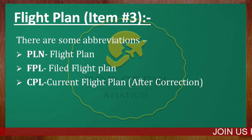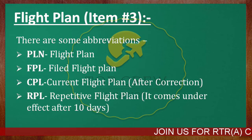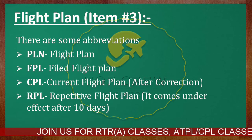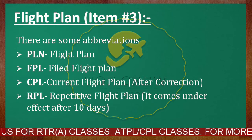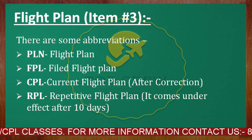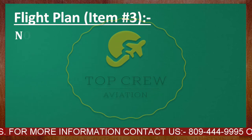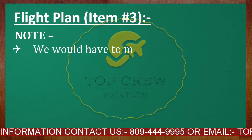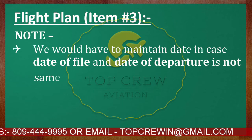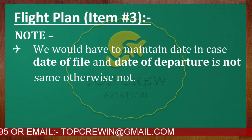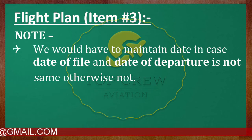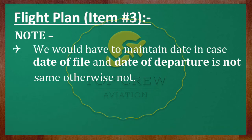The next one is RPL, that is Repetitive Flight Plan. It is mandatory — like, we have filed a flight plan for at least 10 consecutive days; only then can we refer to that particular flight plan as a repetitive flight plan. Note: we would have to maintain the date in case the date of filing and the date of departure are not the same, otherwise not. Which means, if we are filing a flight plan today but not departing today, we have to maintain the date.